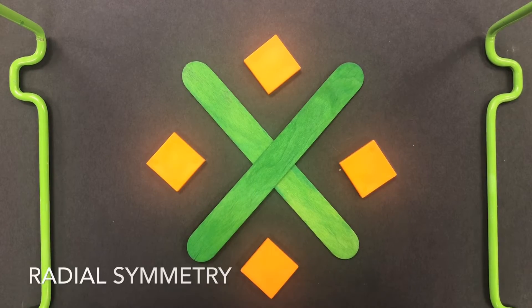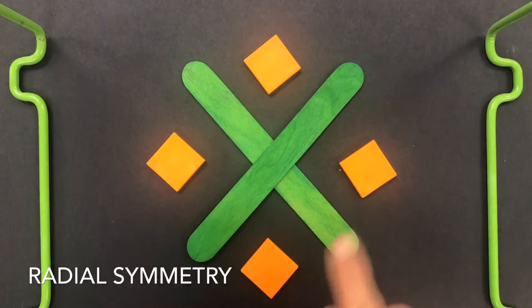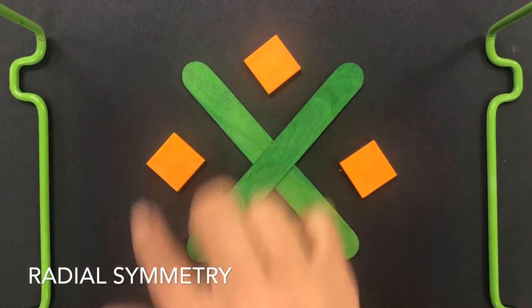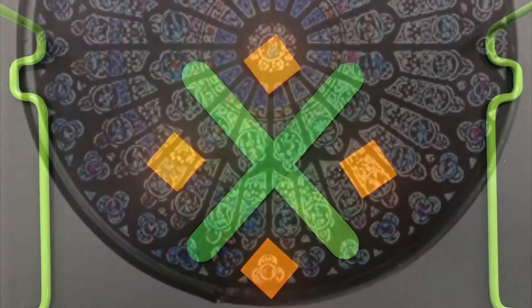Radial balance is a type of formal balance. It is where you have a center point, we call the axis, and everything around it radiates and is exactly the same. Sometimes kids think of a bicycle wheel or when you slice open an orange. Stained glass windows in churches that are round are perfect examples of radial balance.